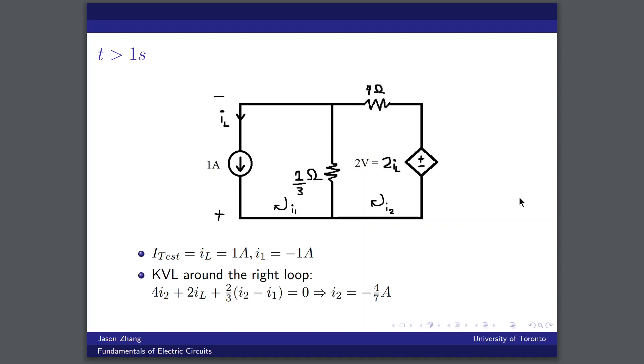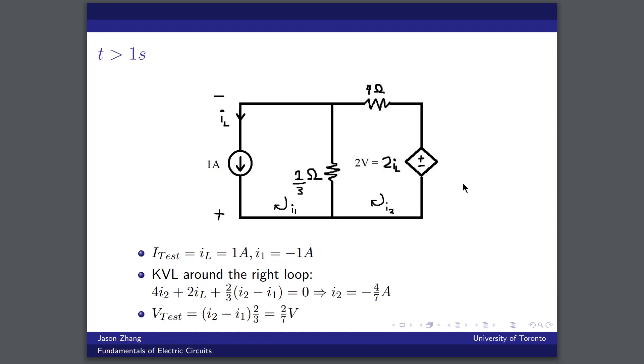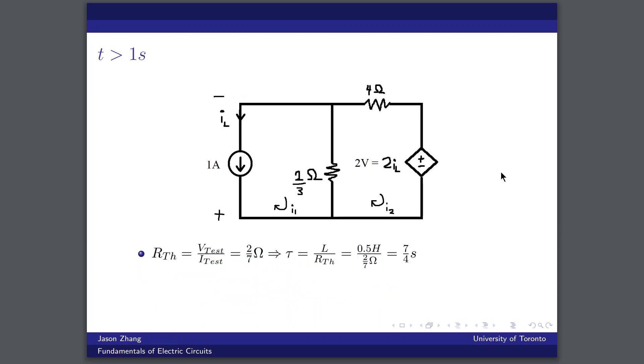Then once again, performing mesh analysis using I1 and I2 to denote our mesh currents, we can use KVL around the right loop to find I2 is equal to minus 4 over 7 amps. So our test voltage across our source is equal to 2 over 7 volts. This gives us a Thevenin resistance of 2 over 7 ohms, which means that tau, our time constant, in this interval is 7 over 4 seconds.